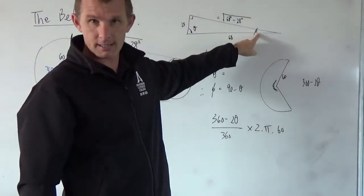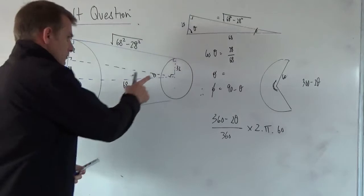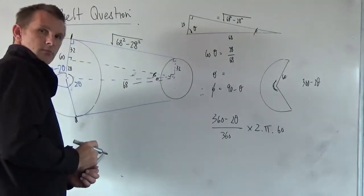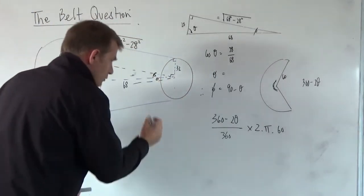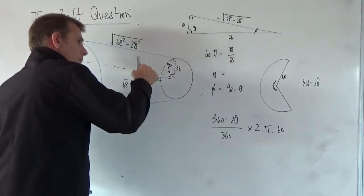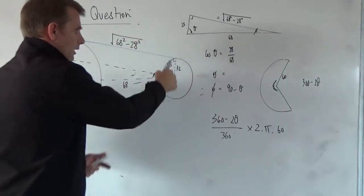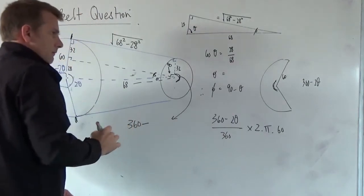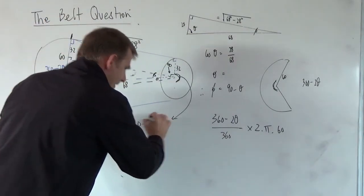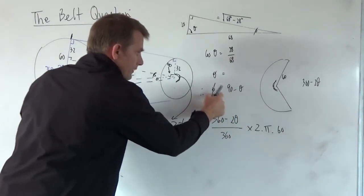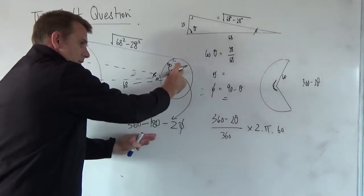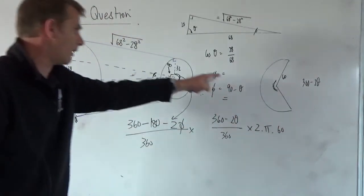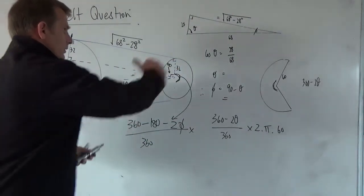Then I'll use this angle right in here. In the same way, wouldn't that replicate itself down there? Here's the trick. With this one, we've got to recognize that we've got 90 degrees there plus the angle, and on the other side, 90 degrees plus the angle. So this angle in here is actually going to be 360 minus 180 minus two lots of this guy here. That will give me the angle. Divide that by 360 in the same way I did here, and then multiply by 2 pi r, but r is going to be 32. That part will give me this.